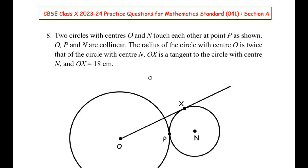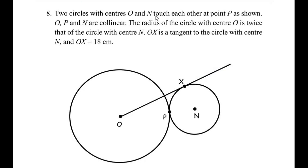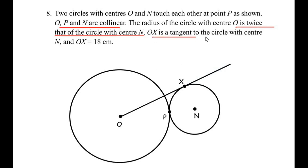Two circles with centers O and N touch each other at point P. O, P, N are collinear. The radius of the circle with center O is twice that of the circle with center N. OX is a tangent to the circle with center N, and OX is equal to 18 centimeters.